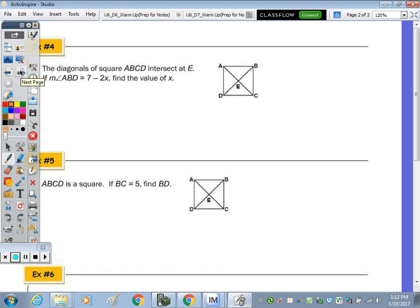Number 4 says the diagonals of square ABCD intersect at point E. If the measure of angle ABD, so let's locate that. If ABD, this angle right here algebraically is 7 minus 2X, find the value of X. Well, what is, we know what it is numerically. 45. So 45 equals 7 minus 2X. Subtract the 7 we get 38. Divide by negative 2 and X is negative 19.